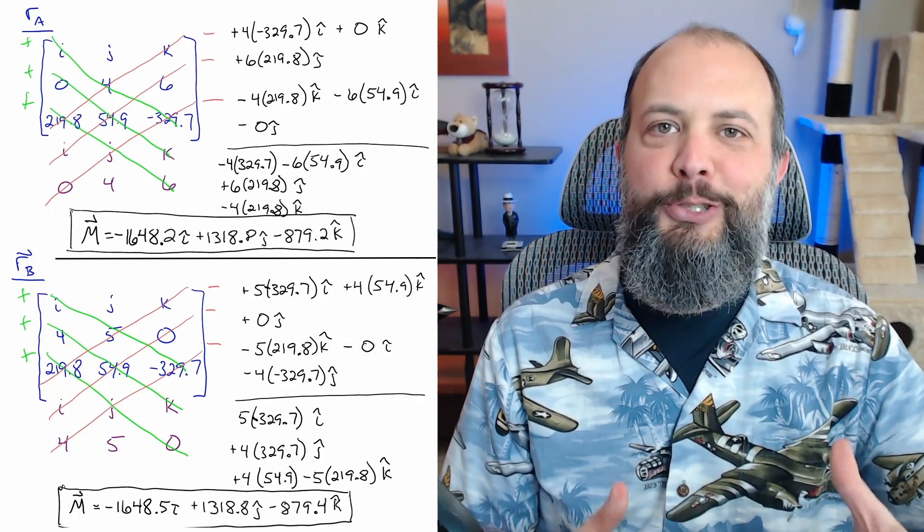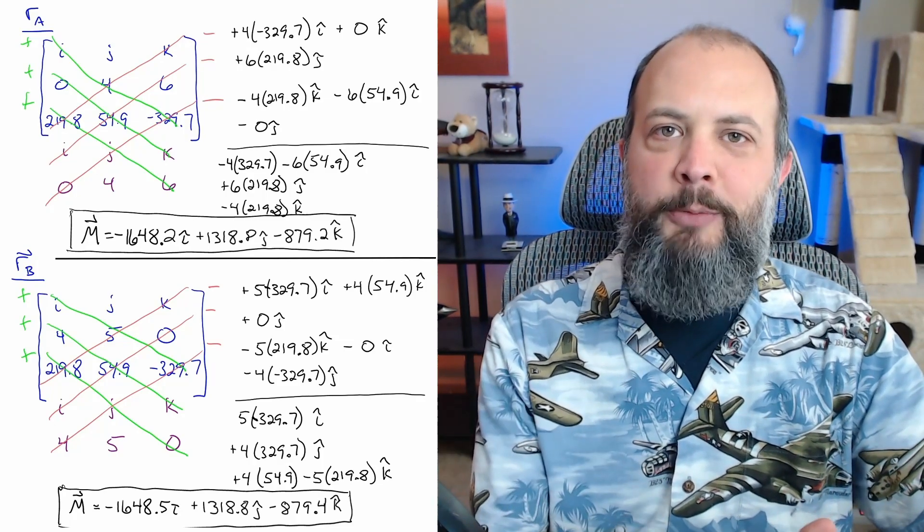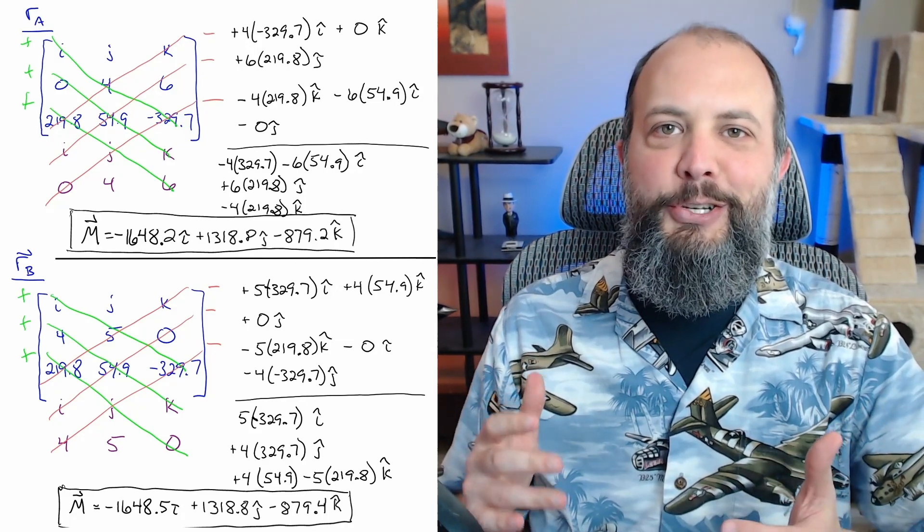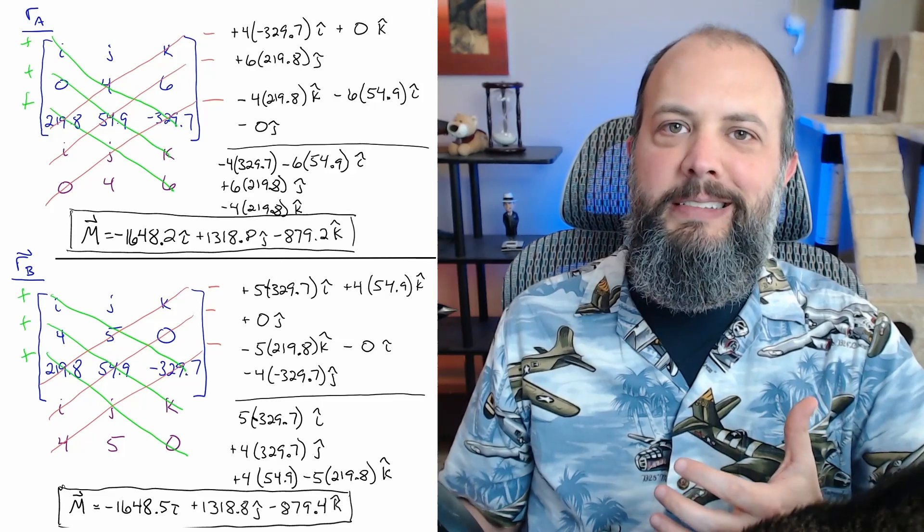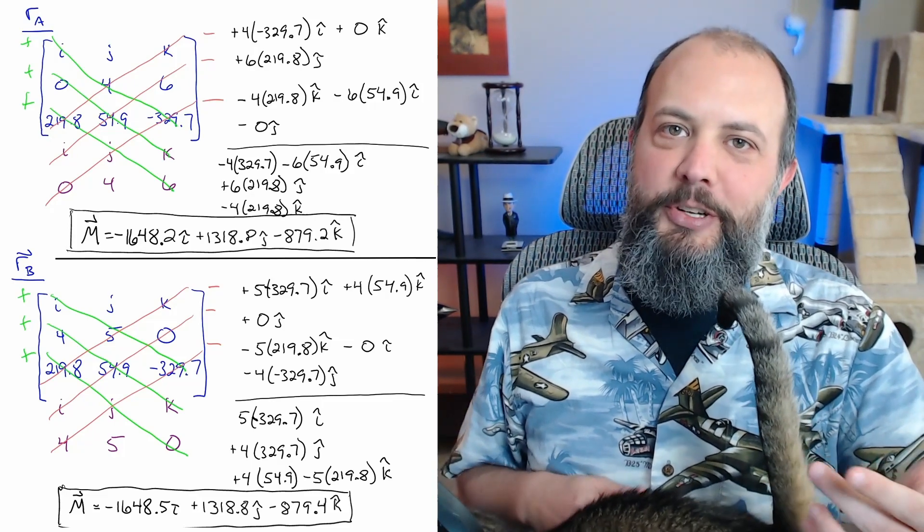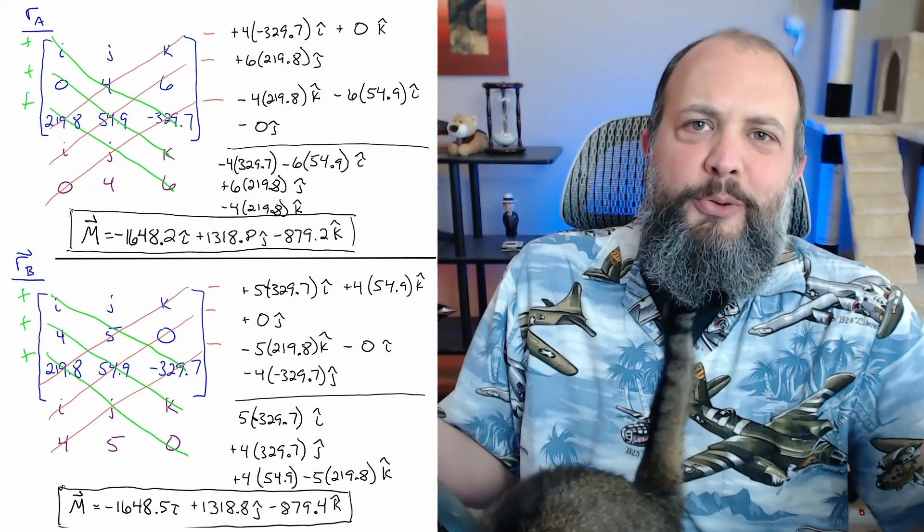Let me know down in the comments, which cross product method do you like better? Are you sticking with the old textbook method just because that's what you learned before? Or have I convinced you to give the new cool method a try? Your TA Indy likes the cool method better because he always forgets the minus sign in the middle term using the textbook method, but you can use whichever one you want.